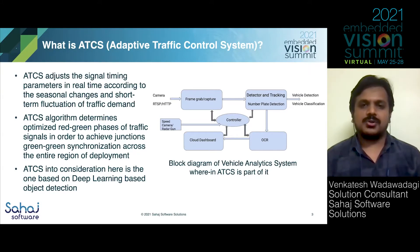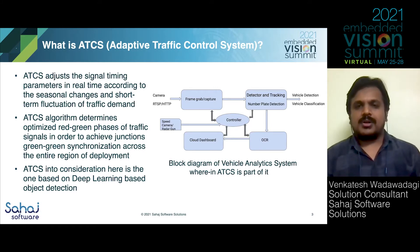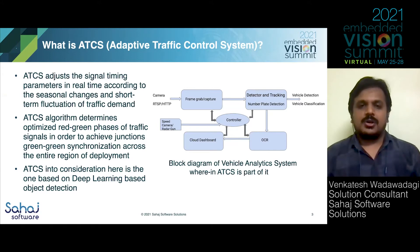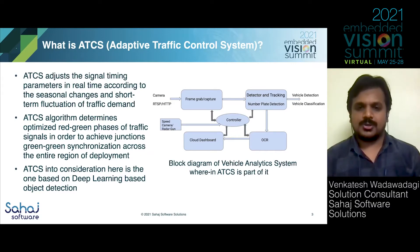The deployment region could be an area in a big city or it could be a small town as well. When it comes to implementation of adaptive traffic control system, there are many ways to go about it. The one under consideration here is a deep learning based object detection based adaptive traffic control system.